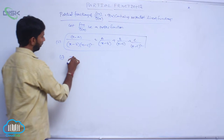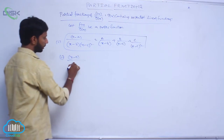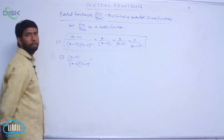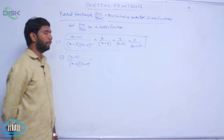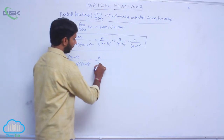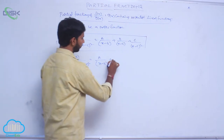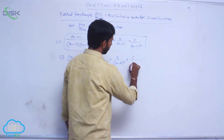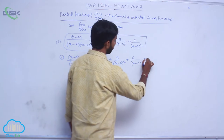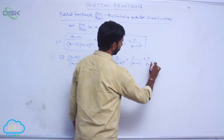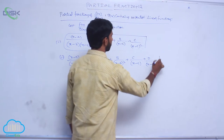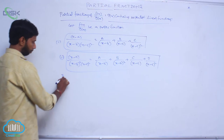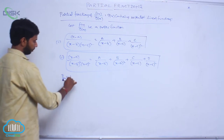The second one is (x minus a) divided by (x minus b) squared times (x minus c) squared, which can be written as A/(x minus b) plus B/(x minus b) squared plus C/(x minus c) plus D/(x minus c) squared.